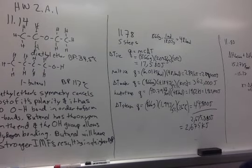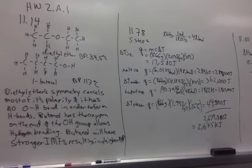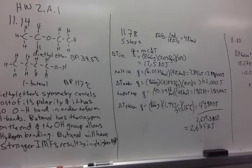Here we have the second problem, 11.78. 11.78 has five steps. We are supposed to tell how much energy it's going to take to go from ice at negative 10 degrees Celsius to steam at 126 degrees Celsius.